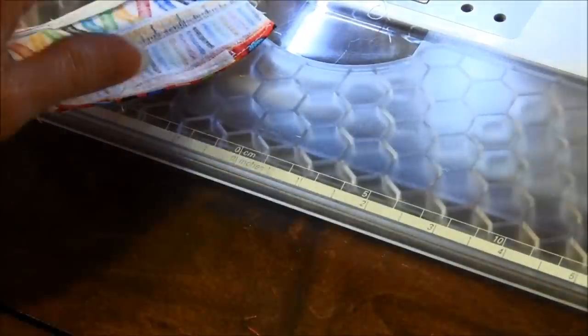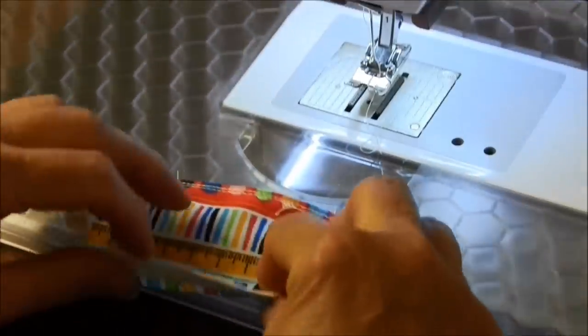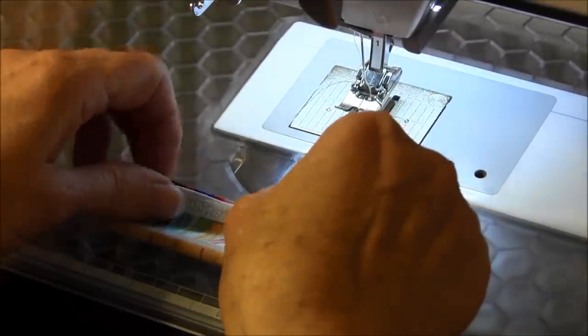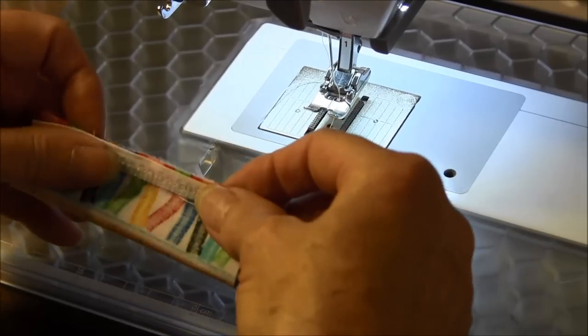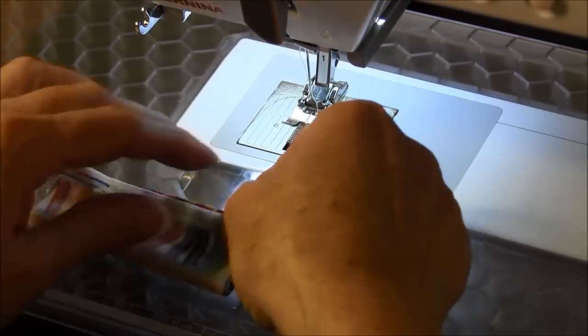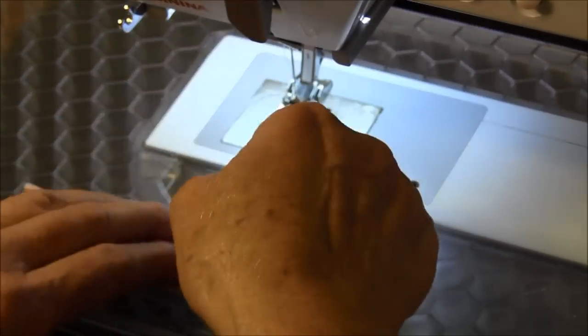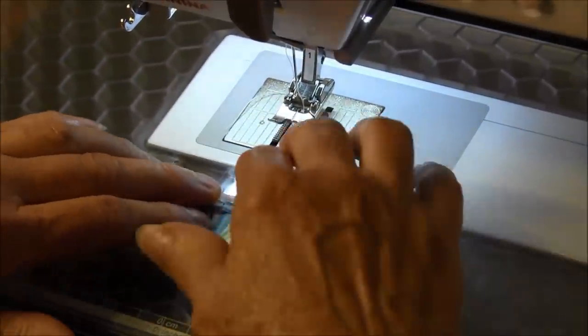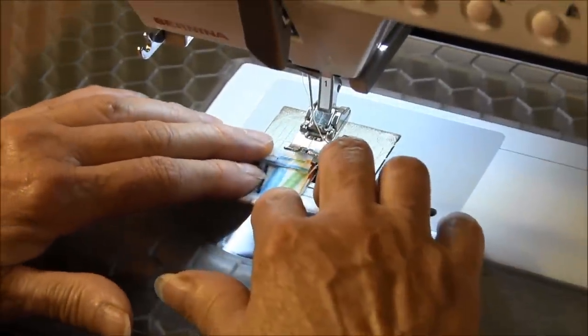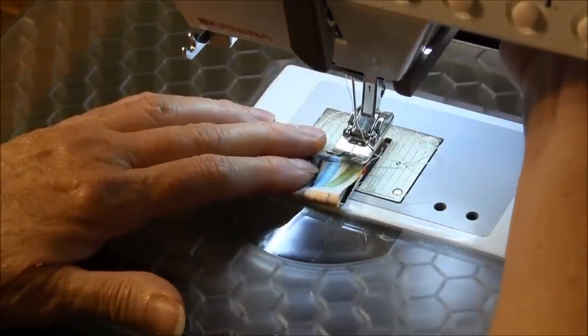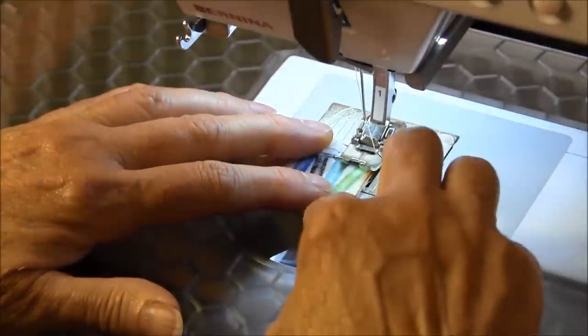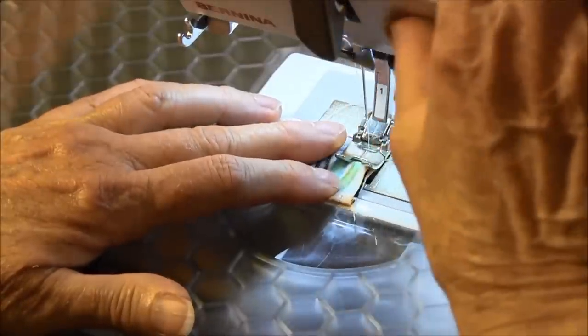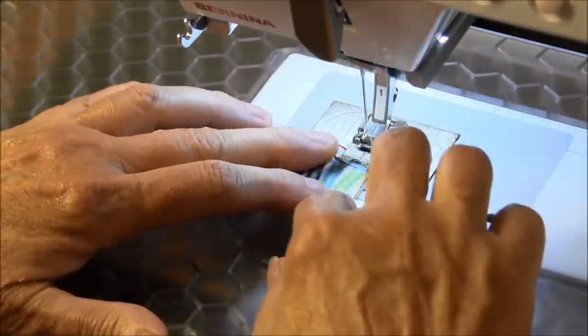Now we're ready to sew the bag with right sides together. Fold it in half. You can put a pin if you want to hold it in place. We're going to sew it a quarter of an inch from the side, back tack at the beginning and the end.